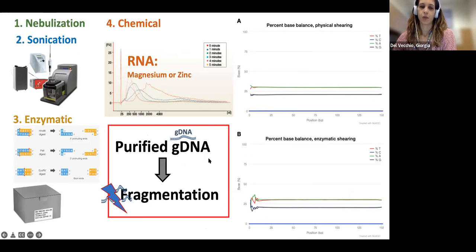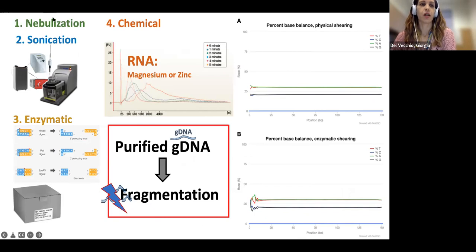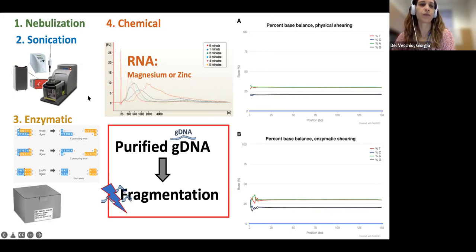Once we obtain purified genomic DNA, the next step in our NGS experiment is fragmentation. We have different strategies: nebulization — which I don't think anyone actually performs anymore — sonication, enzymatic fragmentation, and chemical fragmentation.